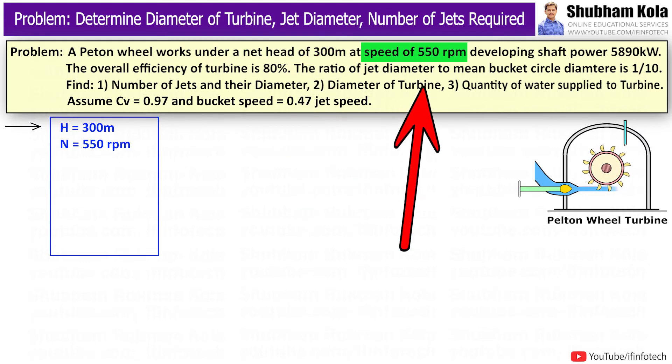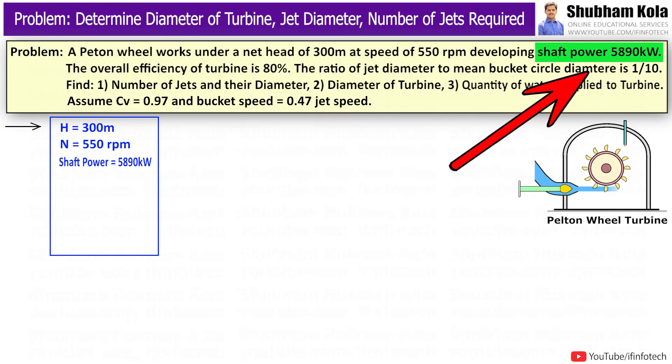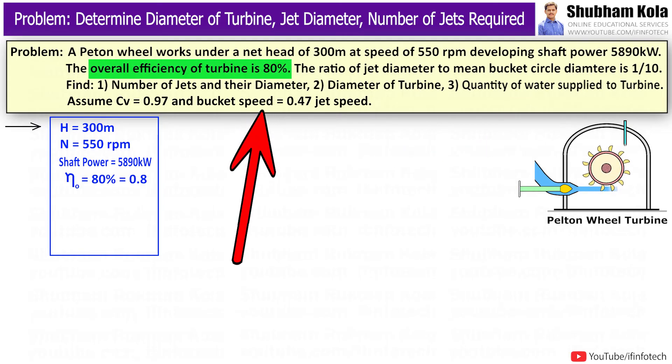Speed N equals 550 RPM. Shaft power equals 5890 kW. Overall efficiency of turbine is 80%, that is 0.8.